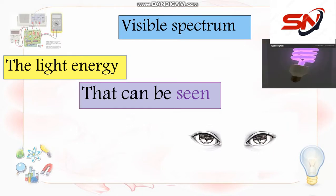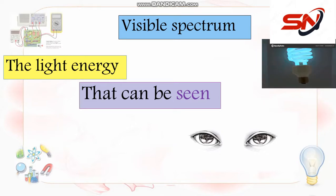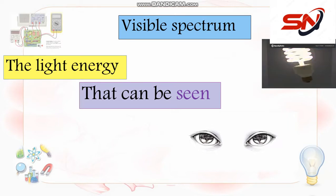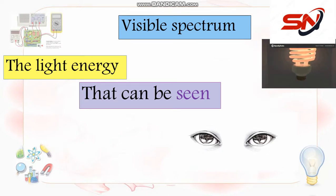وده يخلينا نروح لسؤال تاني — هل فيه حاجة أنا مش بشوفها؟ آه طبعا. زي مثلاً sound energy — هل أنت بتشوف صوتي لما بيطلع لغاية ما يوصل لك؟ لأ طبعا. هل أنت بتشوف الحرارة؟ لأ. هل أنت بتشوف القوة بتاعت magnetic energy؟ لأ. يبقى فيه حاجات بتشوفها وفيه حاجات ما بتشوفهاش. الحاجات اللي بتشوفها اسمها visible spectrum — light energy that can be seen.